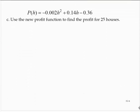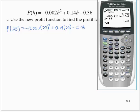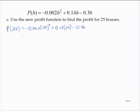So now find the profit for 25 houses. That would be P of 25. So that's negative 0.002 times 25 squared plus 0.14 times 25 minus 0.36, which gives 1.89. So the profit for building 25 houses is $1.89 million.